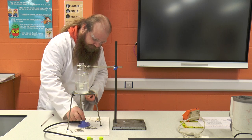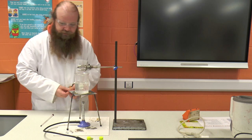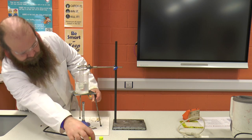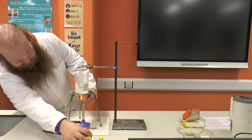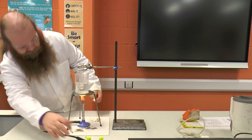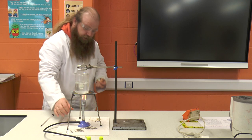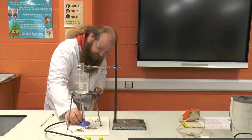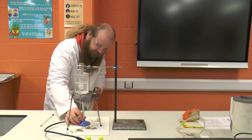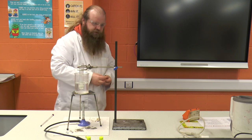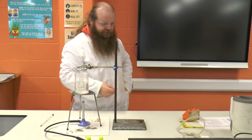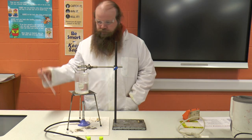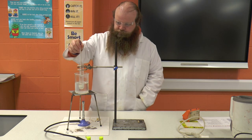We're going to set our Bunsen burner to safety flame and then we're going to light it and nicely heat our water so that we can get the stearic acid to melt. We can use our thermometer to monitor the temperature.